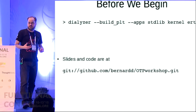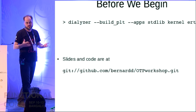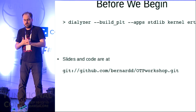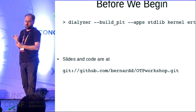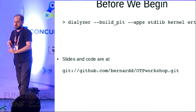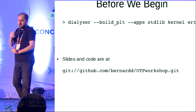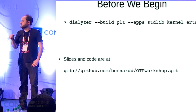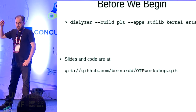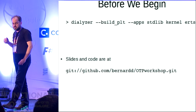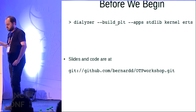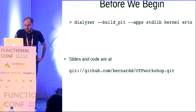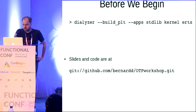Before we get too far, this is designed as a tutorial. You can follow along or not as the mood takes you. If you are following along, you'll need a working version of Erlang installed and the source code available at that GitHub address. Also, if you're going to follow along to the end, we're going to be playing a little bit with Dialyzer. It's worth running that command at the top now because it builds up what's called a PLT, which makes Dialyzer actually run at a reasonable speed.